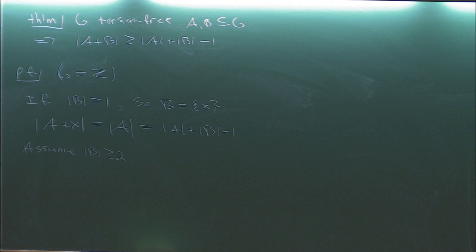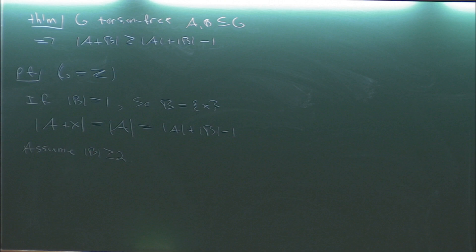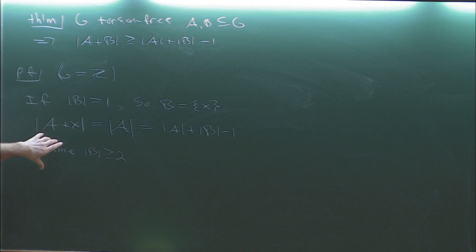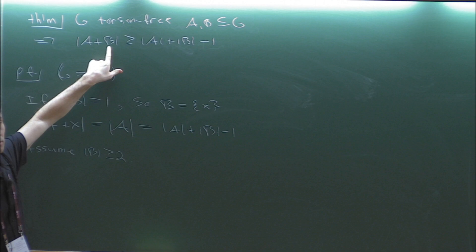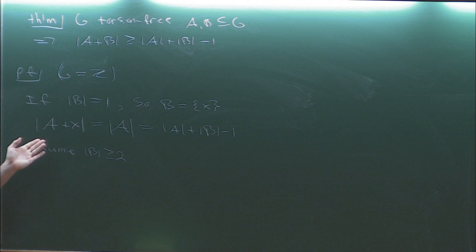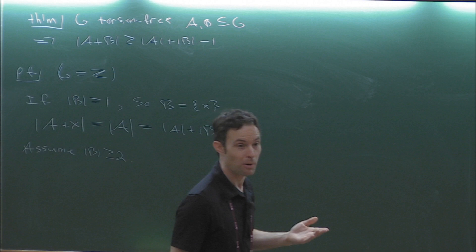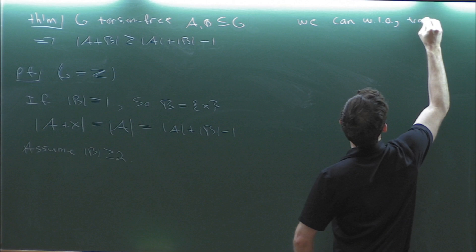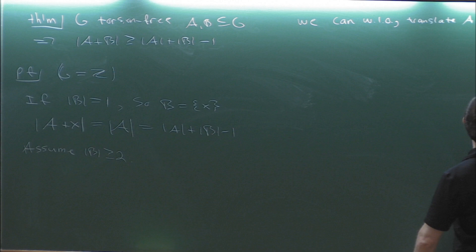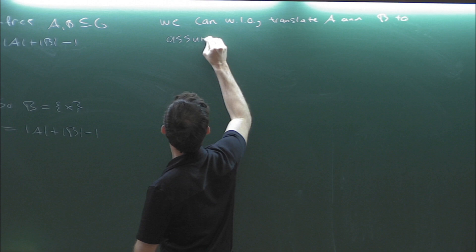When studying sumsets, we don't care about which translate of A and B we use. If you translate A, the set is essentially the same as regards adding it to any other set. So we can replace A and B by any translates without changing anything. We'll translate so that zero is the smallest element in both A and B.